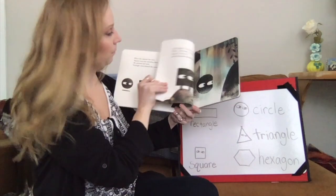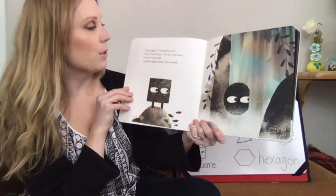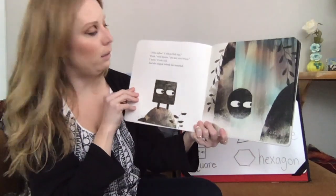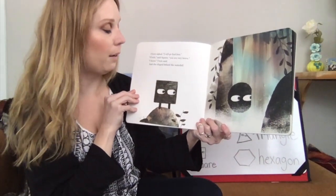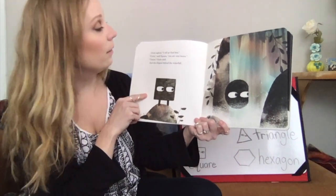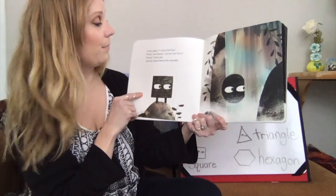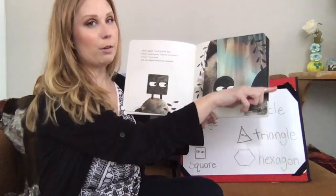Uh-oh. Circle sighed, I will go find him. Circle, said Square. You are very brave. I know, Circle said, and she slipped behind the waterfall.